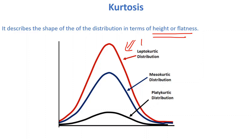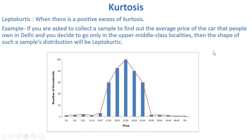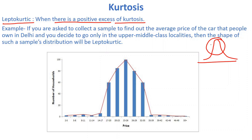Kurtosis refers to what type of peaks a distribution has. The first type is leptokurtic, where there is a positive excess of kurtosis. Here, the x-axis shows price and the y-axis shows number of households, and the distribution has a tall, sharp peak.